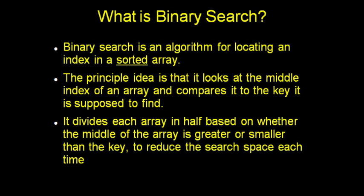Binary search is an algorithm for locating an index of an item you are looking for in a sorted array or list. The idea is that you first look at the middle index of the array and then compare it to what you're actually looking for. And because the list is sorted, you can decide whether what you're looking for is in the top half or the bottom half.